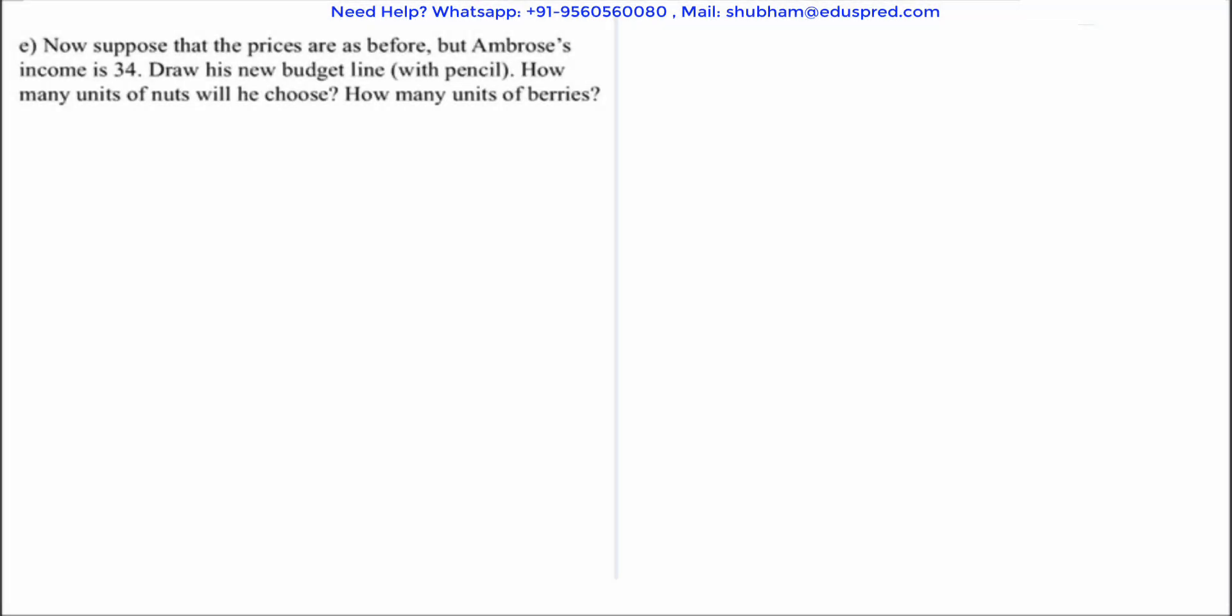In this video we would be solving this question which says now suppose that the prices are as before but Ambrose's income is 34. Draw his new budget line with pencil. How many units of nuts will he choose and how many units of berries will he choose?